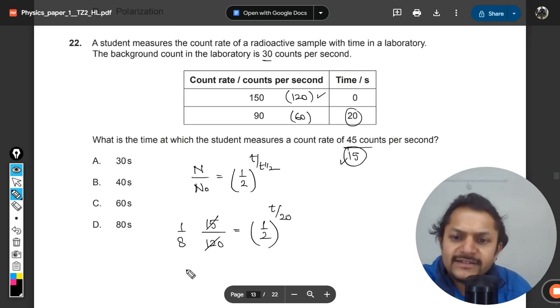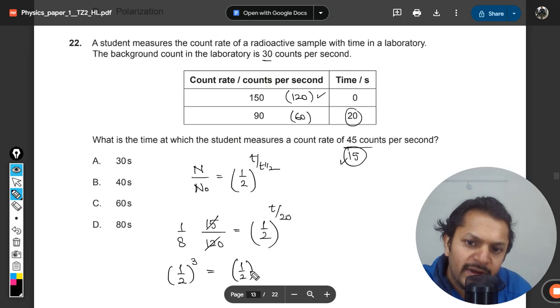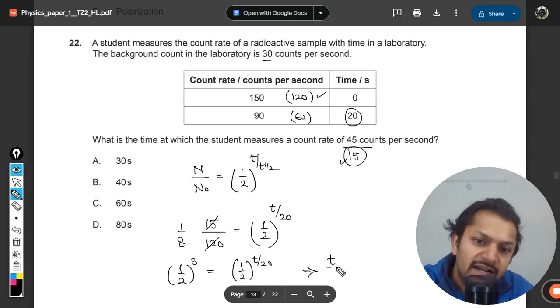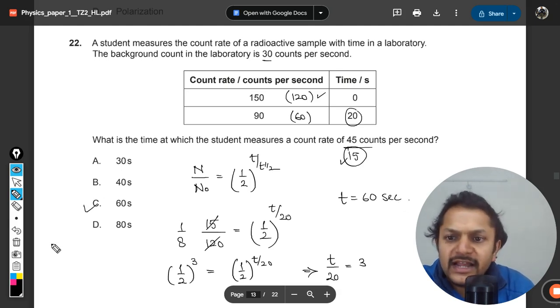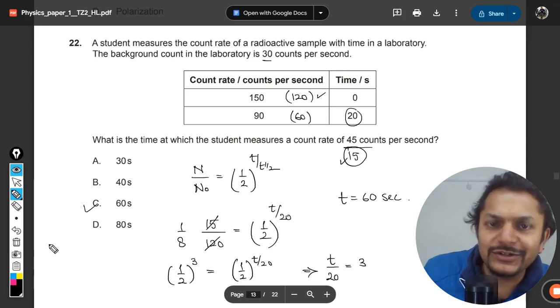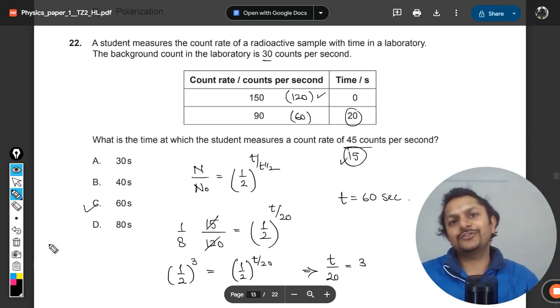We can write 1/8 as 1/2 raised to power 3, and this is written as 1/2 raised to power t divided by 20. Which means that t divided by 20 should be equal to 3, and which only means that t equals 60 seconds. That is why C will be the correct answer.